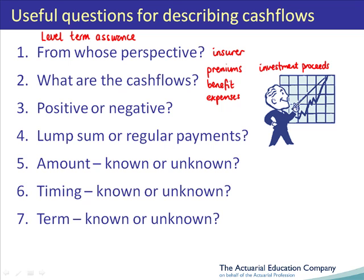We'll start with the premiums. These represent a positive cash flow to the insurer. Premiums tend to be paid regularly. The amount of the premiums is usually known and constant. The timing of the premiums is also usually known, typically annually or monthly. The term of the premiums is unknown since they cease on death, and the timing of this is unknown.